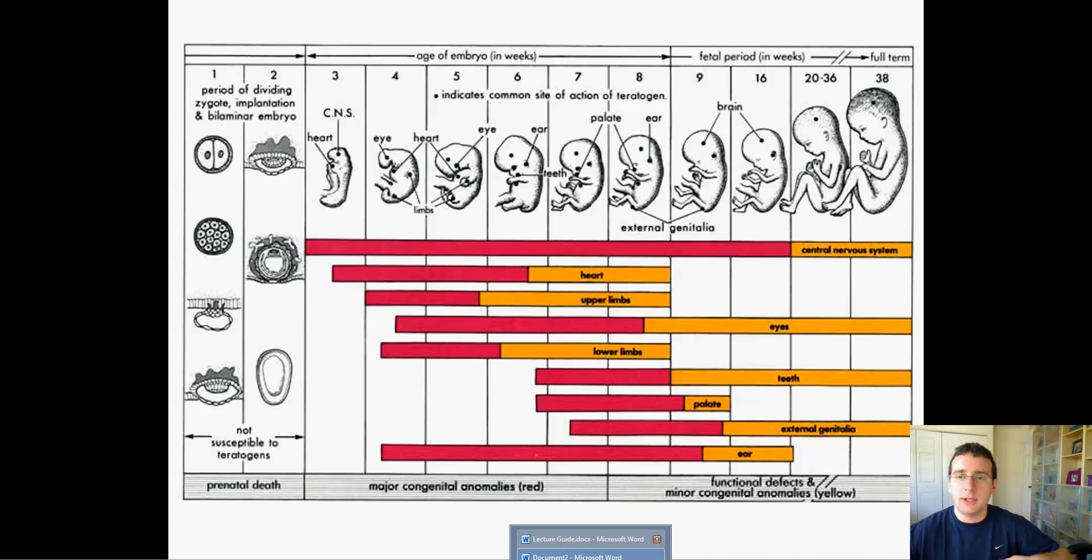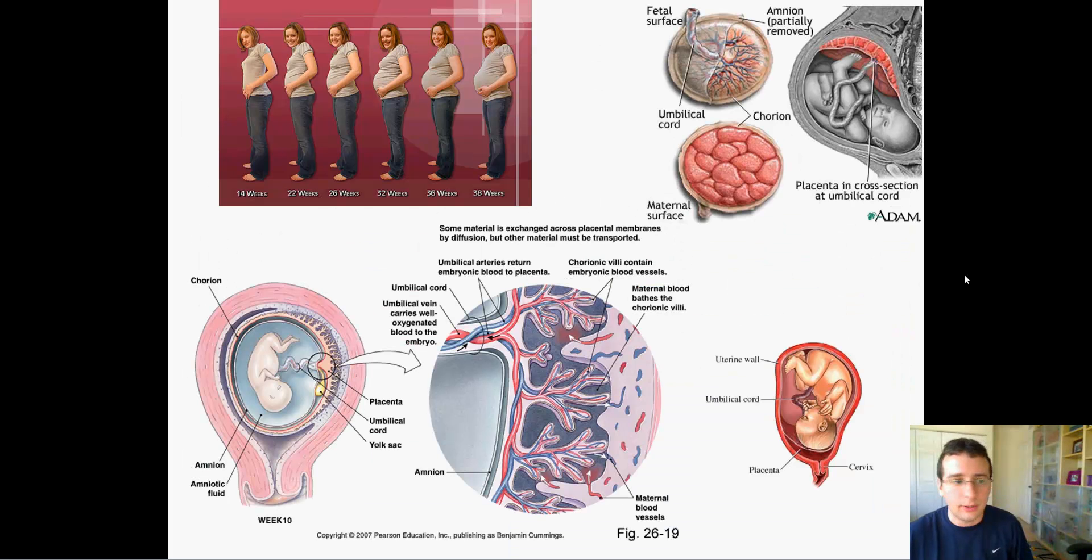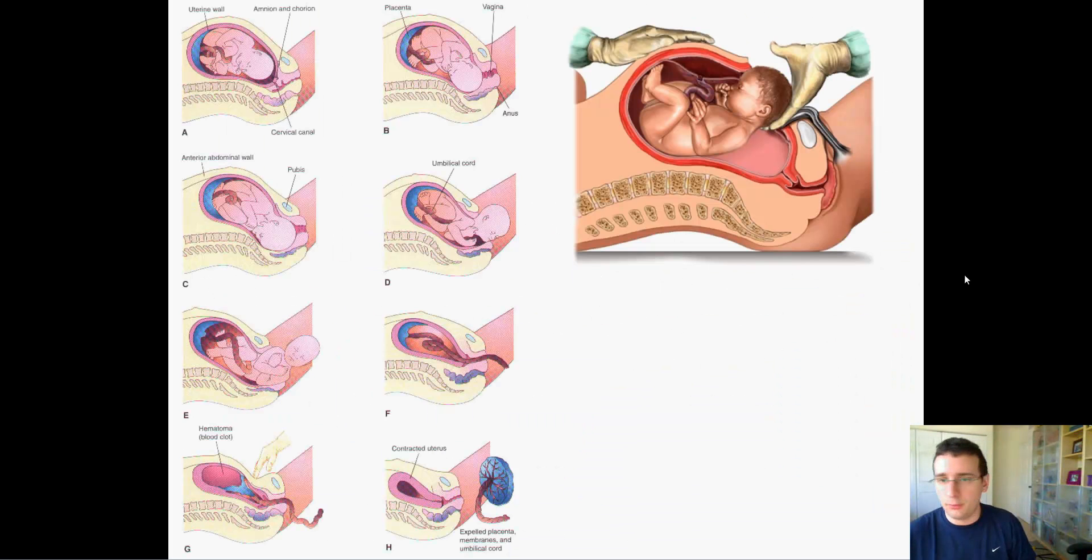That's why you have stillbirths. That's why you have things like miscarriages. That's when something went wrong in the actual implantation or the formation of the placenta or the growth process, or the baby had a genetic problem. A lot of things have to be right in order for the baby to successfully reach the point of birth, which we talked about last time. Make sure you review these things and learn about the things we talked about.